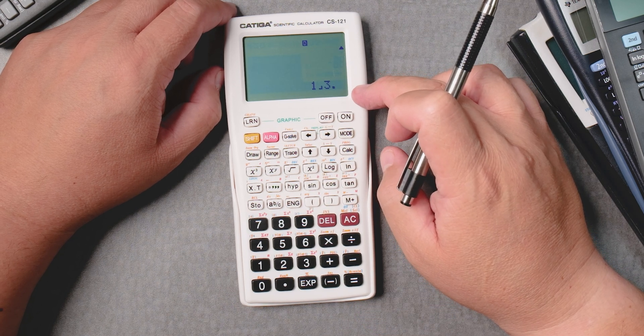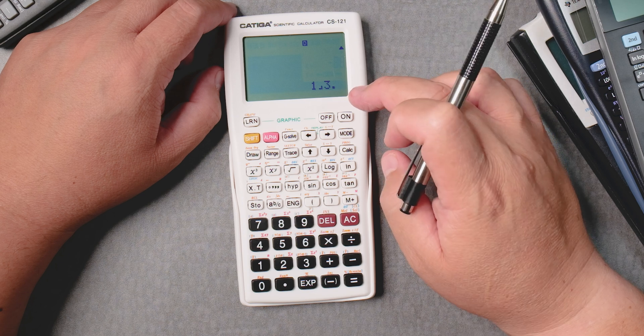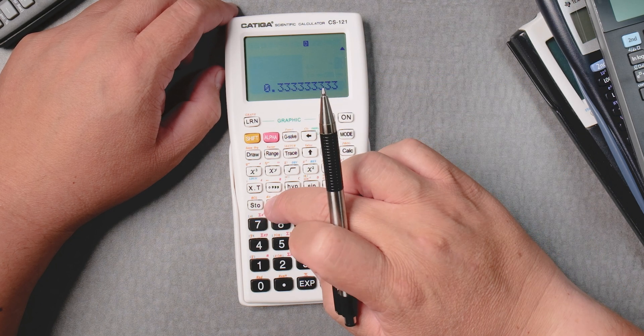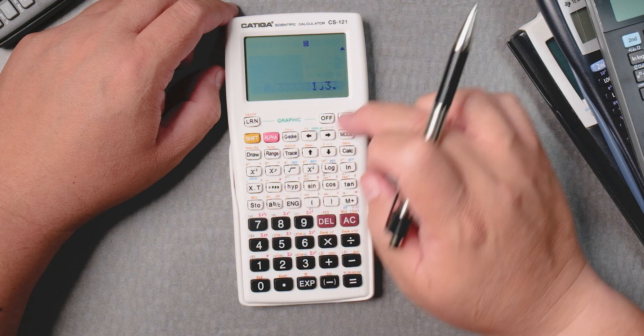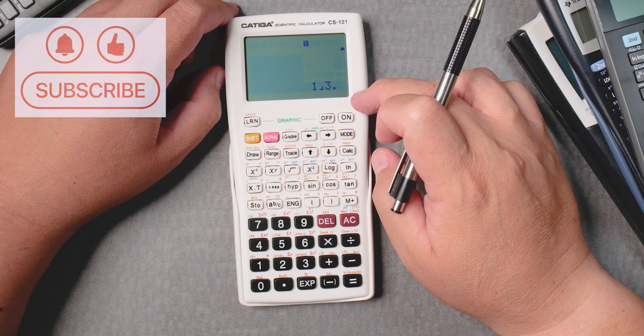Let's say you want the decimal version of this. Press ABC. It gives you the decimal version. Press ABC again, it gives you the fraction.